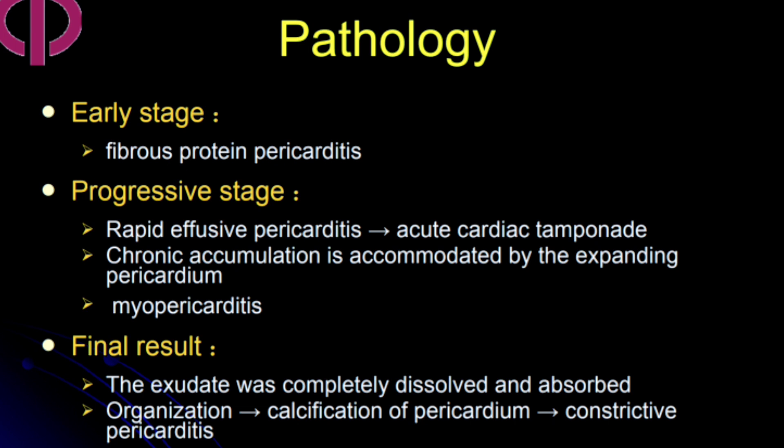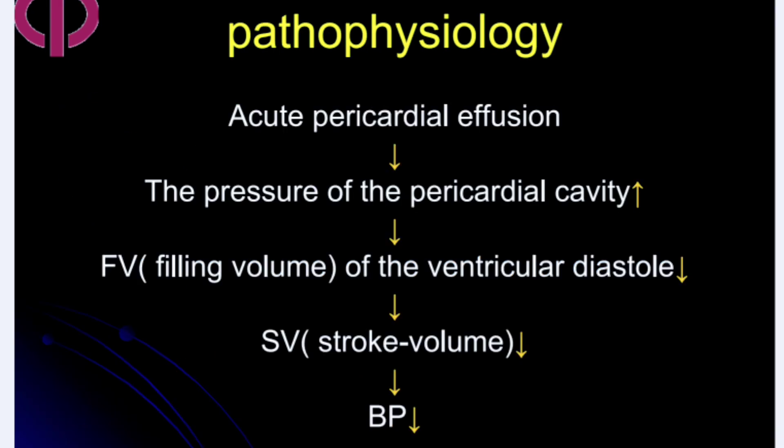In the final stage, the exudate becomes completely dissolved and absorbed; this may organize and form a calcified pericardium, causing secondary constrictive pericarditis. Regarding cardiac physiology, when there is acute pericardial effusion, the pressure of the pericardial cavity increases, which increases ventricular filling pressure during diastole, thereby decreasing stroke volume and hence decreasing blood pressure.